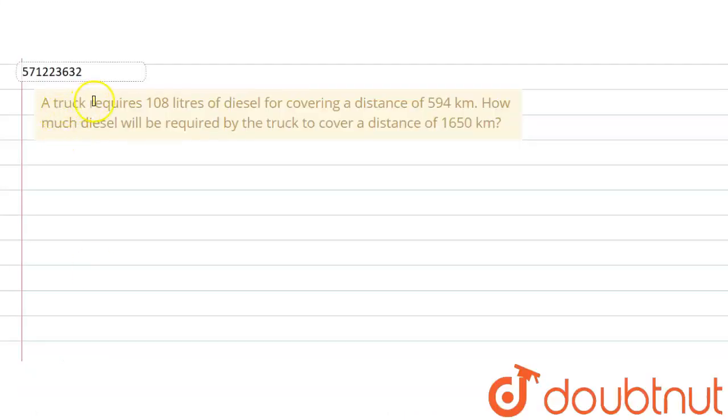The given question says that a truck requires 108 liters of diesel for covering a distance of 594 kilometers. Then how much diesel will be required by the truck to cover a distance of 1650 kilometers?